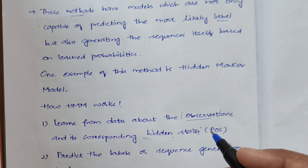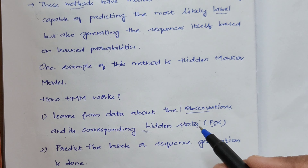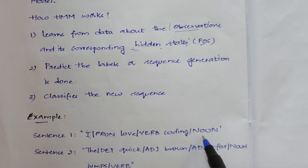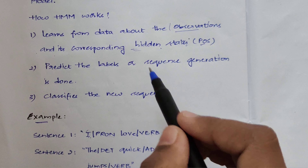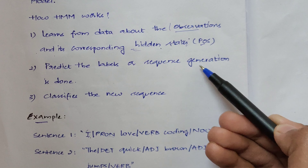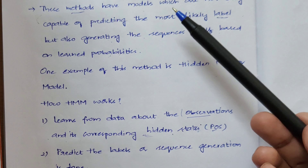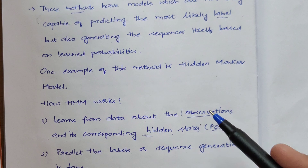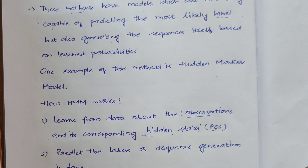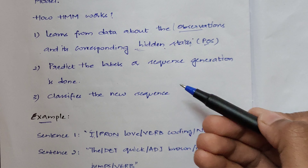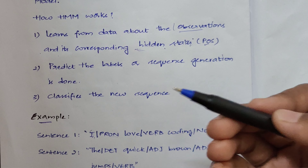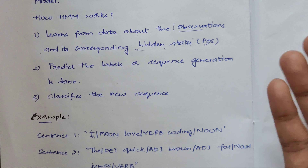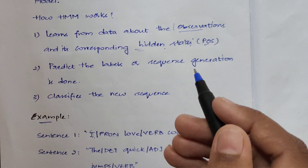The hidden states are the parts of speech tagged to the words in the training sentences, as you can see in the example — for 'I' we tag pronoun, and so on. In the second step, the model predicts labels or performs sequence generation. It can detect whether a boundary is a sentence or topic boundary, generate new sequences, and also classify new sequences by assigning parts of speech or other tags.